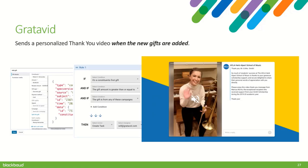The next example is from Gratavid, a Blackboard partner with a service that sends personalized thank you videos to constituents. Their app subscribes to the new gift added event type so it can get notified when new gifts are processed within Blackboard. Their app responds to the event by calling Sky API to get more information from the gift — who is the constituent, how much was the gift, and the campaign it was made to — so it can send the appropriate personalized thank you video.